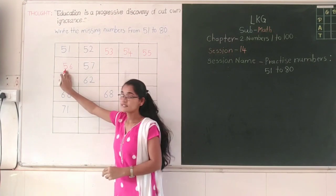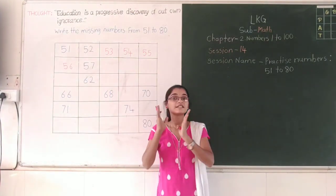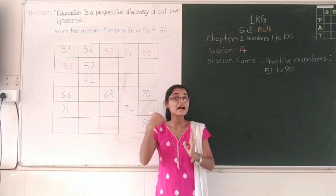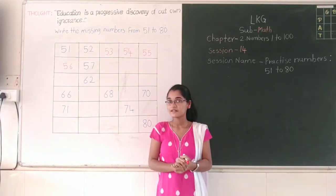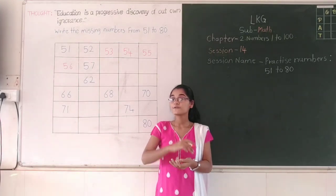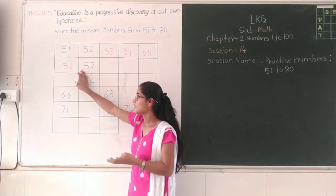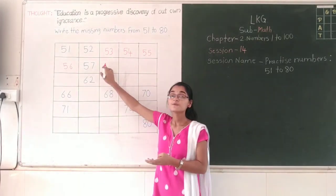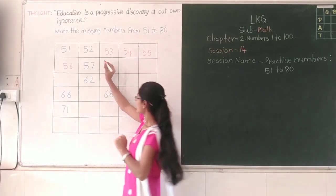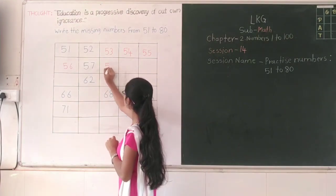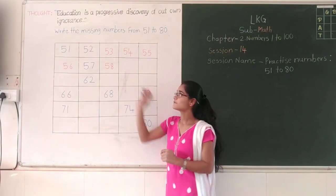After 56, which number will come? 57. Now I am going to write 57. 57. 58. Right? Yes. Now I am going to write 58.